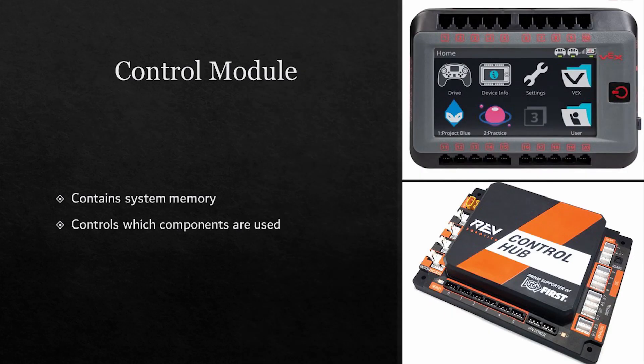The control module is next. This is equivalent to the brains of the robot. It contains all of the system memory and controls the robot during the match. The top control module shown is the VEX V5 robot brain, while the bottom control module is the REV control hub, used in FTC.